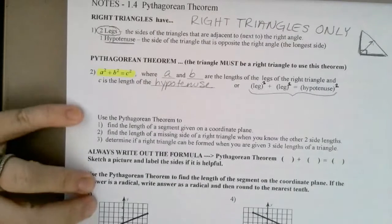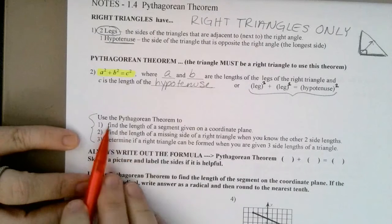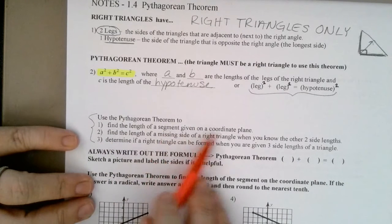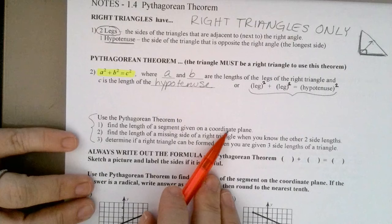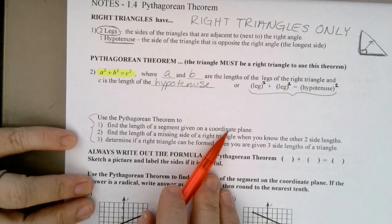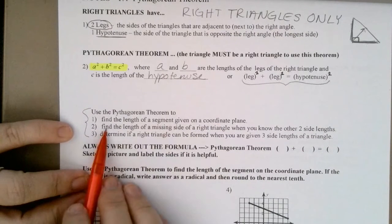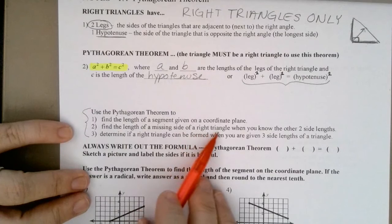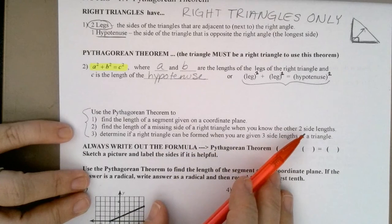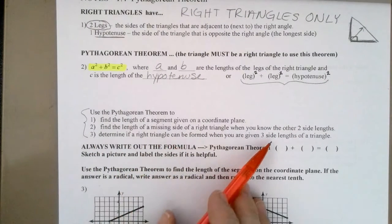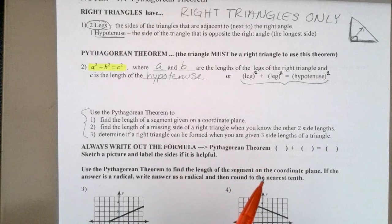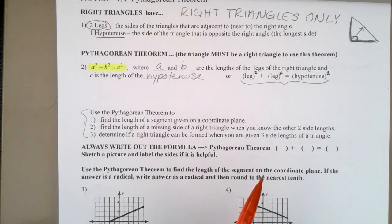What are things we use the Pythagorean theorem to do? We use it to find the length of a segment on a coordinate plane. If we don't want to use the distance formula, we can use the Pythagorean theorem. We can use it to find the length of a missing side of a right triangle if I know the other two side lengths. And we can use it to determine if I have a right triangle if I'm given all three side lengths. Because if I can set it up so that A squared plus B squared equals C squared, and that works out given those numbers, then it is a right triangle.